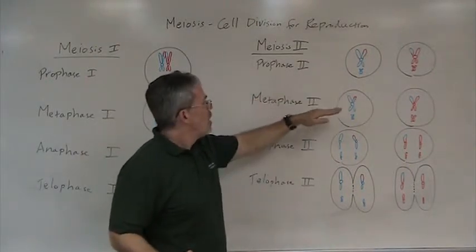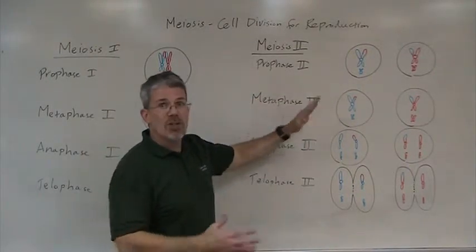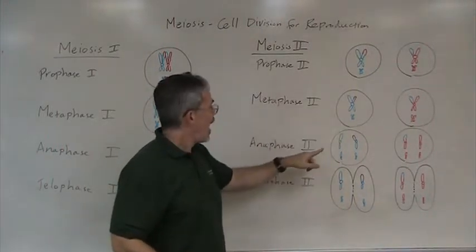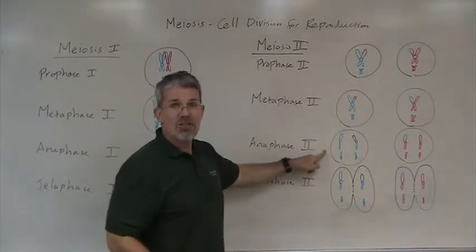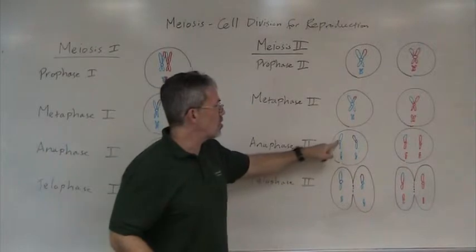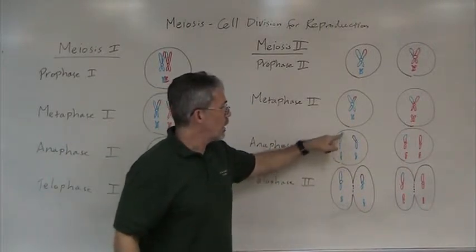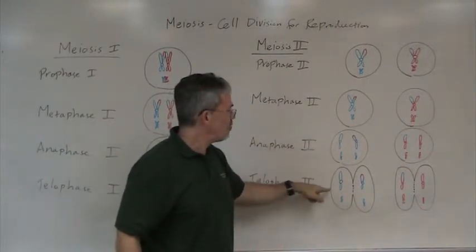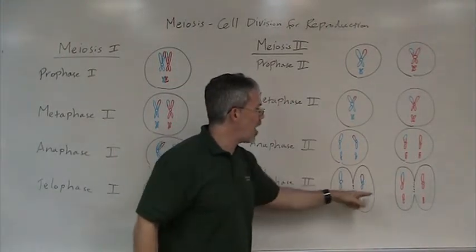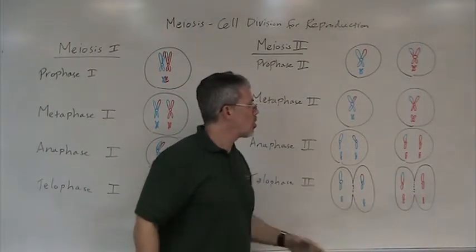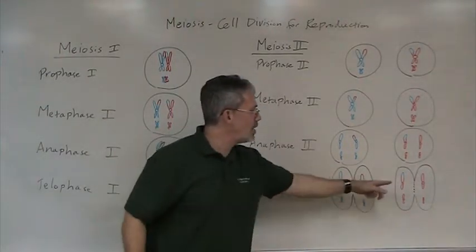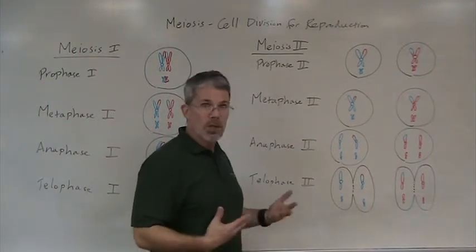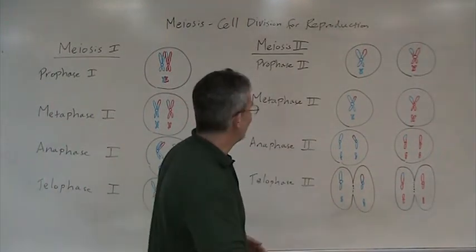Prophase II — nothing new to tell you there. In metaphase II, they're going to line up singly, just like they did in mitosis. Anaphase II is also like mitosis — the centromere splits and the sister chromatids are separated. And finally, after telophase II, we've got four total daughter cells. You'll notice that none of them are identical to each other, which again is part of the plan here.